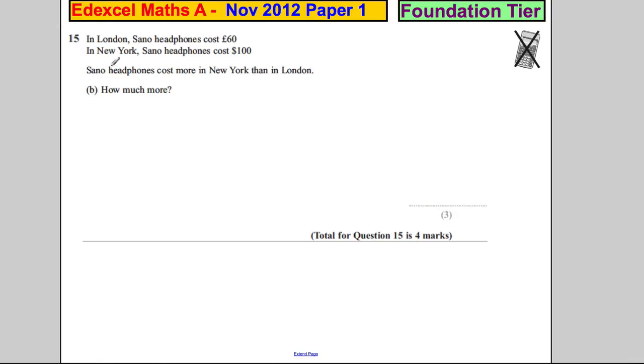In London, Sano headphones cost 60 pounds. In New York, Sano headphones cost $100. Sano headphones cost more in New York than London. How much more?